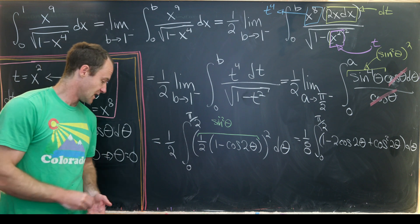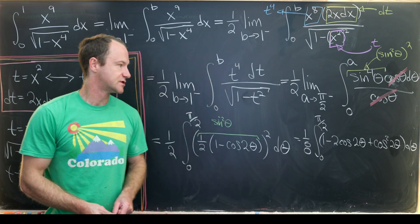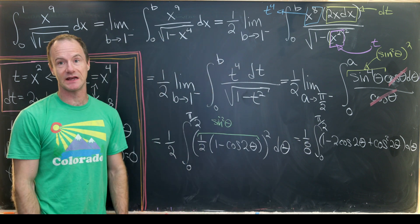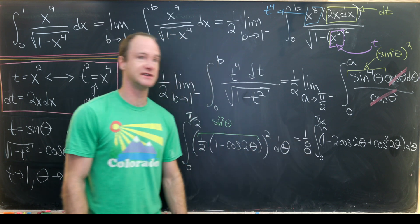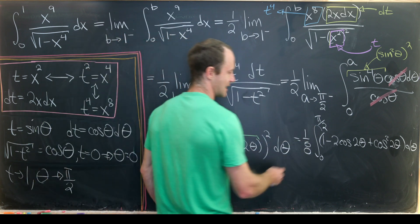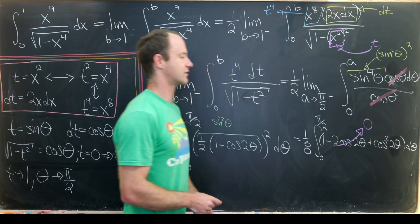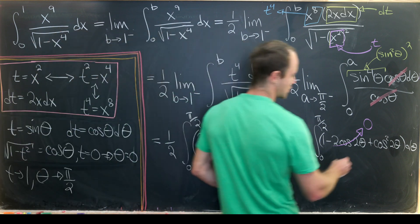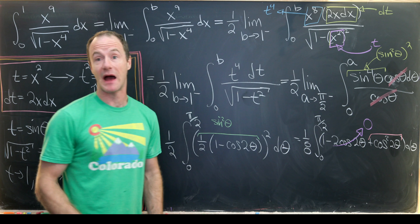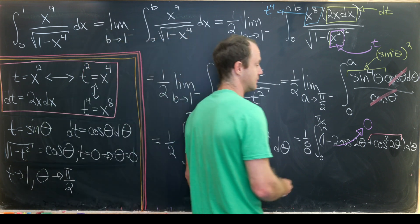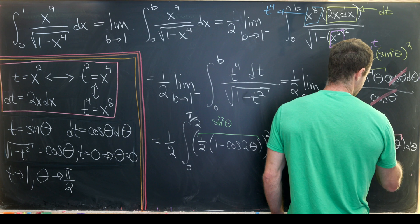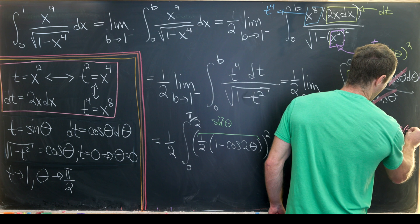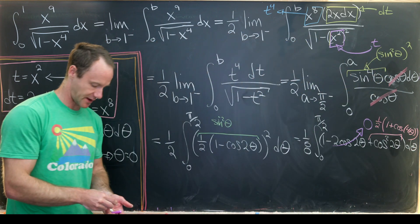Now we can do some tricks. If we integrate cos(2θ), we get sin(2θ), which evaluates to 0 at π/2 and 0. So that integral gives us 0. Furthermore, we can take this cos² and apply the power reducing formula again. This is 1/2(1 + cos(4θ)), because we double that angle.